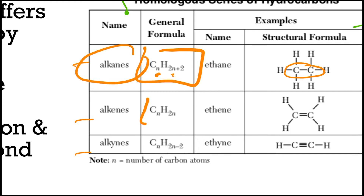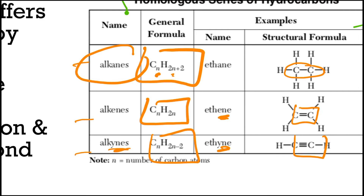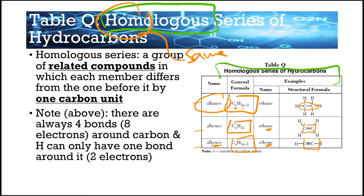Similarly, alkenes fit the formula CₙH₂ₙ — they all have double bonds and end in '-ene.' Alkynes have a triple bond, fit the formula CₙH₂ₙ₋₂, and end in '-yne.' You can tell if compounds are related based on their names — scientists designed this naming system to make things easier.